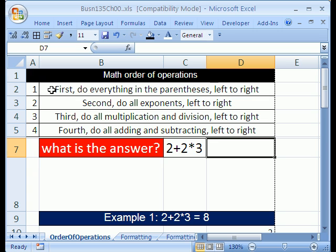Here's the order of operations. First, do everything in parentheses, left to right. Second, do all exponents, left to right. Third, do all multiplication and division, left to right. And fourth, do all adding and subtracting, left to right.